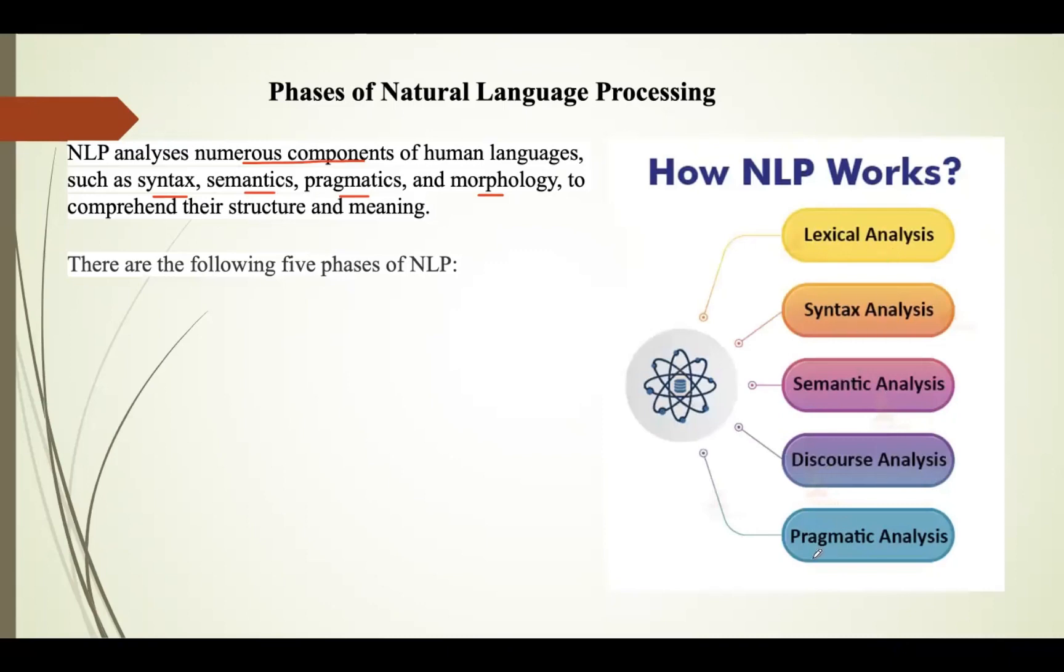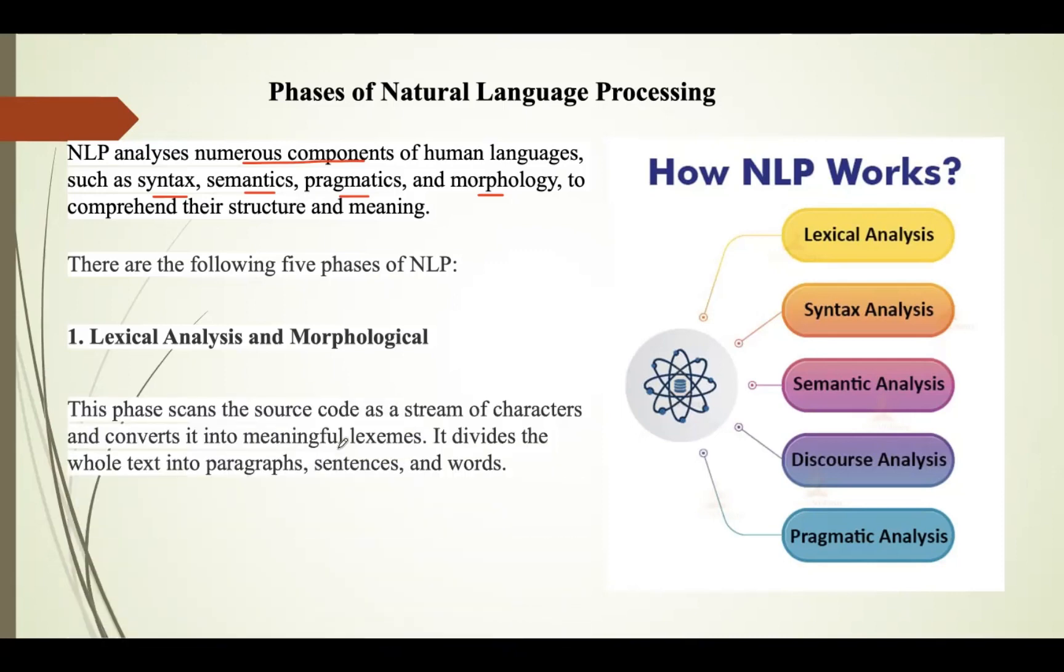The five phases in NLP are lexical analysis, syntax analysis, semantic analysis, discourse analysis, and pragmatic analysis. First is lexical analysis and morphological. Lexical analysis is considered the initial step in NLP. It entails recognizing and analyzing word structures. The collection of words and phrases in a language are referred to as lexicon. This is a process of breaking down text files into paragraphs, phrases, and words.